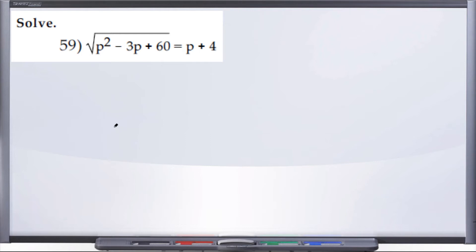All right, number 59, we're asked to solve radical p squared minus 3p plus 60 equals p plus 4. So we want to solve for p, and right now we have p on both sides of the equation.